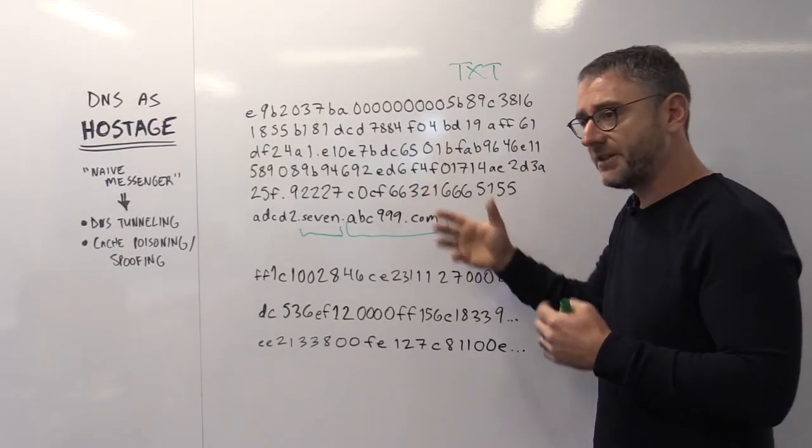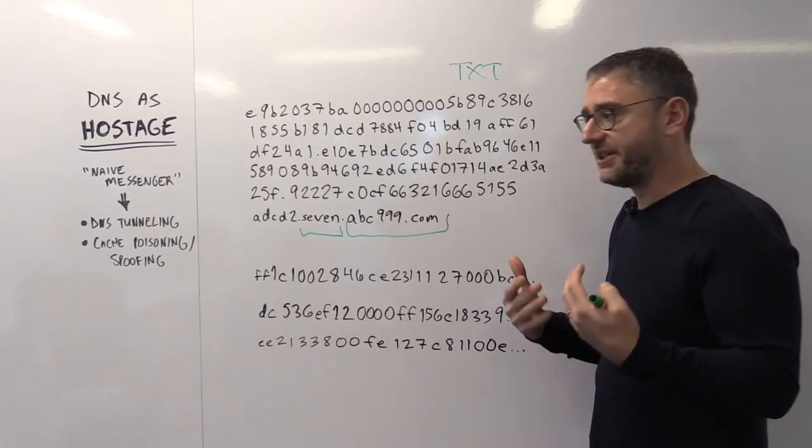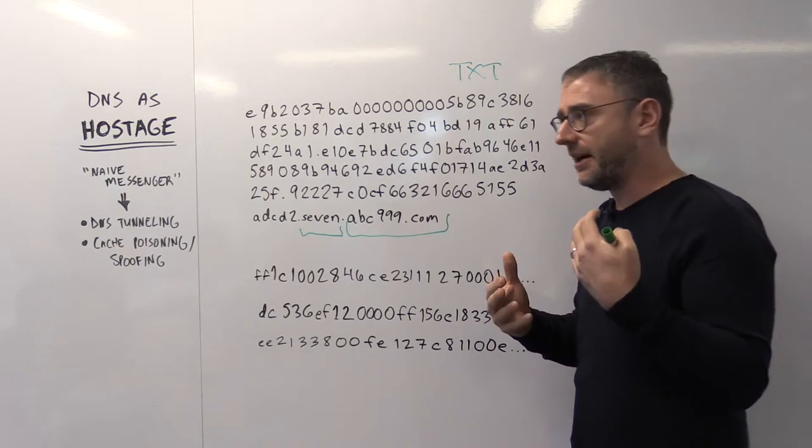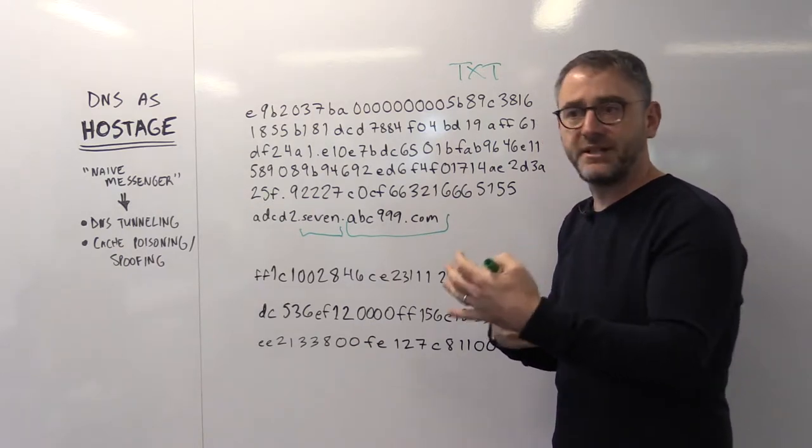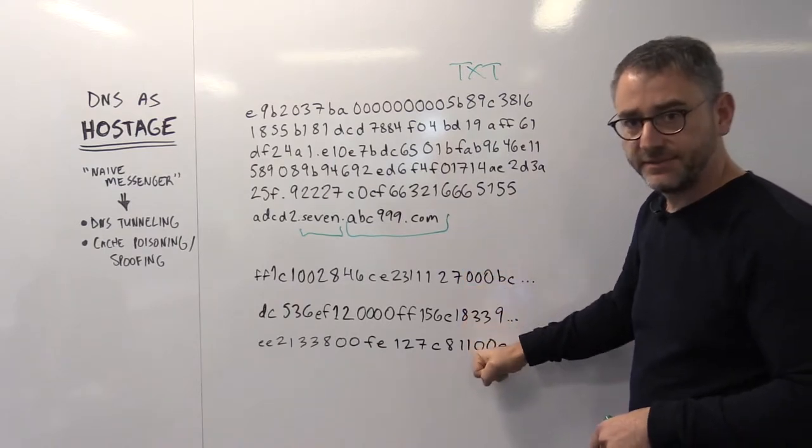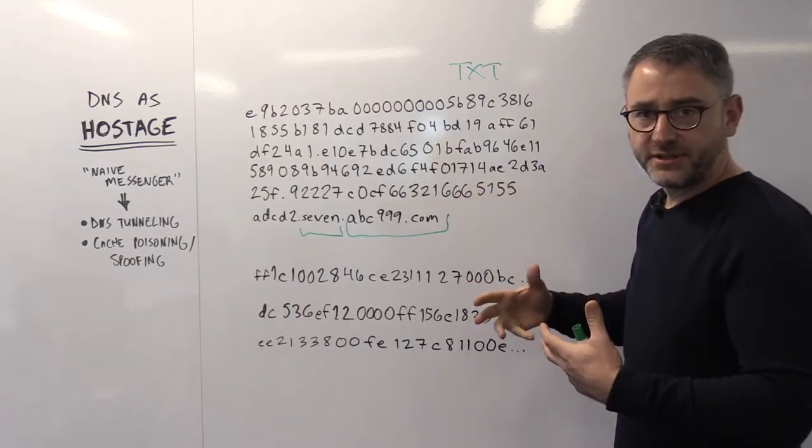Sometimes these sorts of domains are perfectly valid, though. You see it, for instance, with antivirus vendors and others that use DNS as a mechanism to send messages back and forth. So what makes these odd? How can we spot these things?